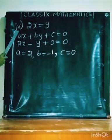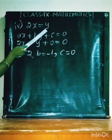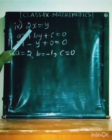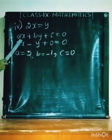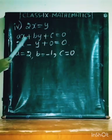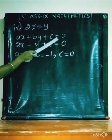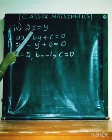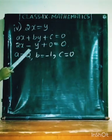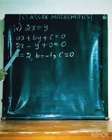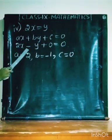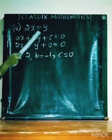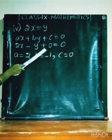Subdivision 4: 2x equal to y. The general formula of a linear equation is AX plus BY plus C equal to 0. We transpose Y to the LHS, it becomes minus Y. That gives 2x minus y. There is no constant term, so we write it as 0.